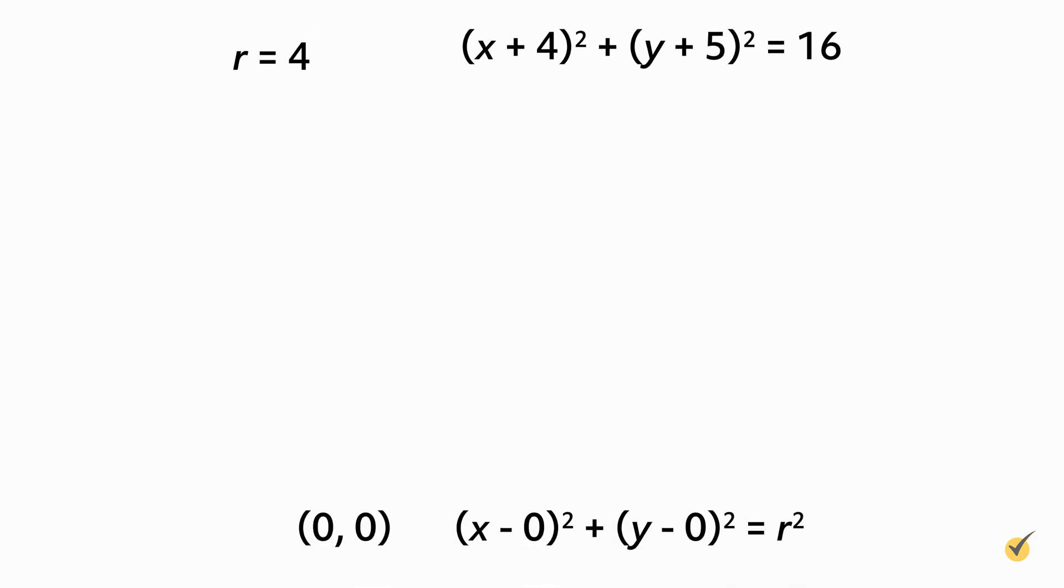When the center of the circle is at the point (0, 0), also known as the origin, our equation gets simpler. x minus 0 squared plus y minus 0 squared equals r squared becomes x squared plus y squared equals r squared. Simple, right? But we've got a little bit carried away. Let's get back to our problem.